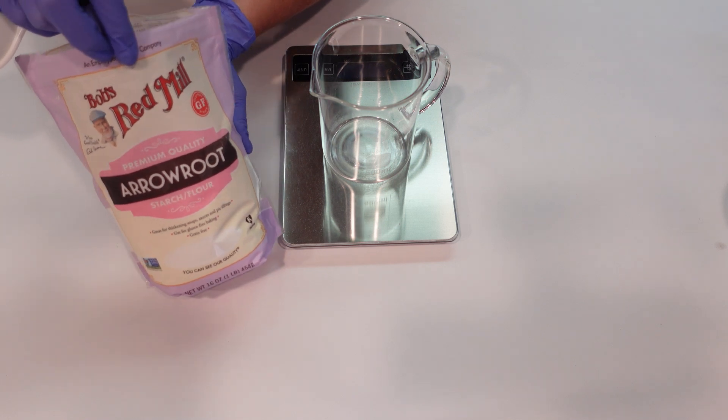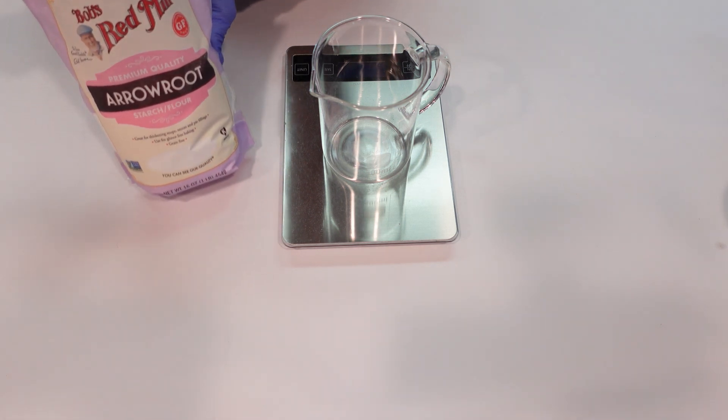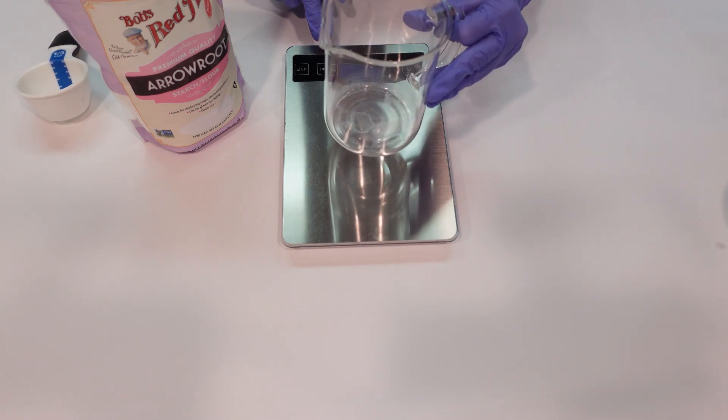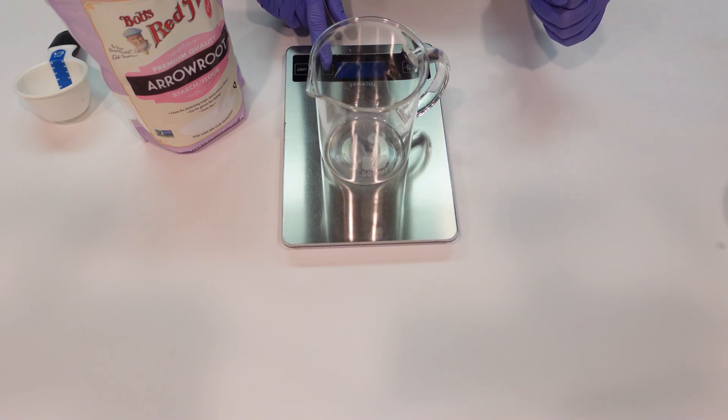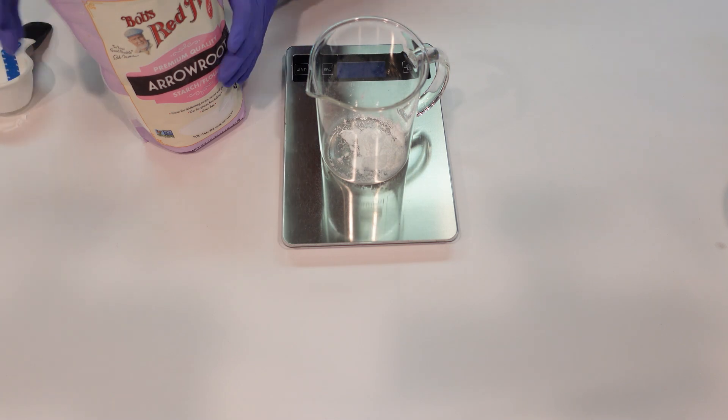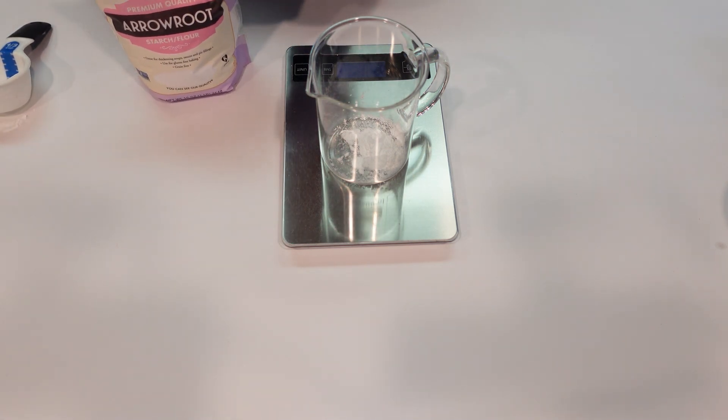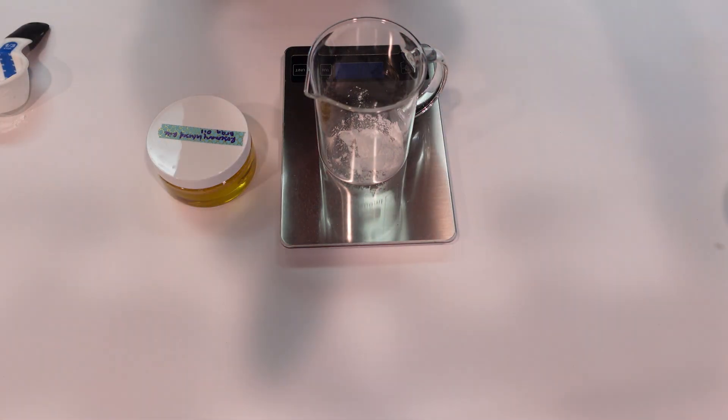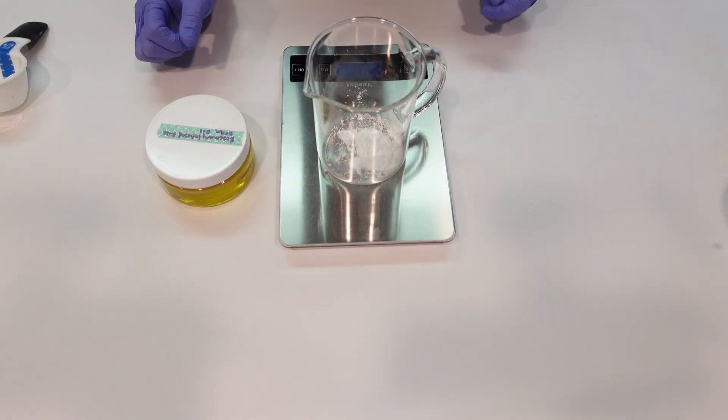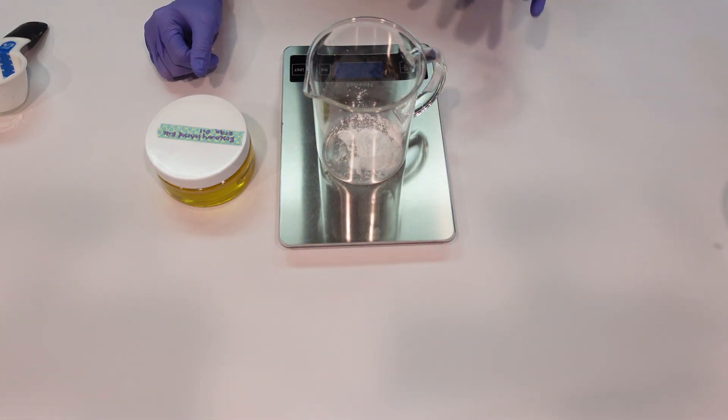The ingredients I'm weighing off right now are the ingredients that go into the heated oil phase of this formula. So I'm going to be weighing off some arrowroot powder. Arrowroot powder is really good for its ability to absorb wetness and also helps to absorb odor, so we're going to be putting in some arrowroot powder directly into the oil phase. I find that when it's heated up with the oils, it's easier to combine it, it doesn't clump up.